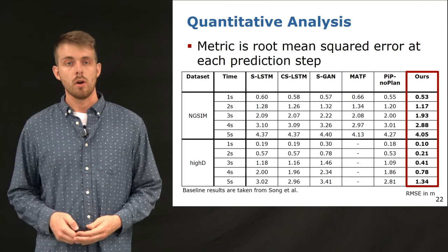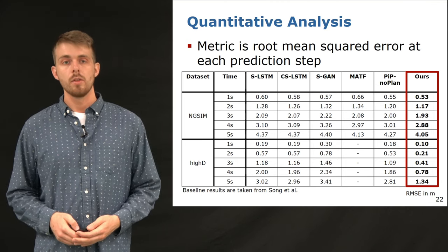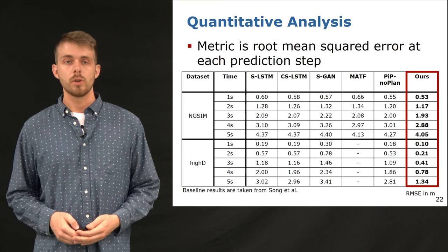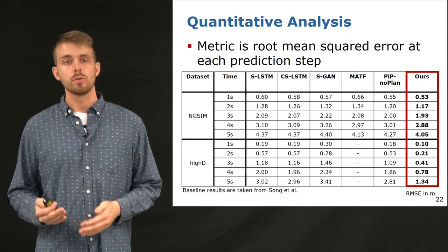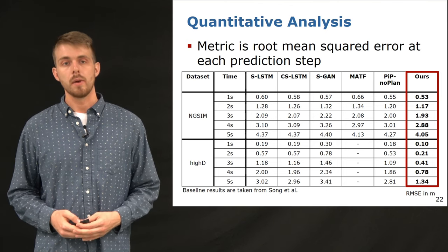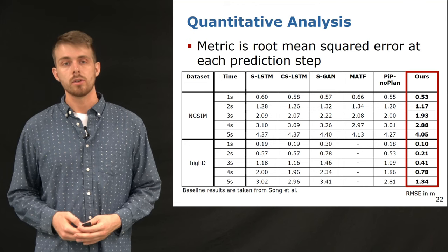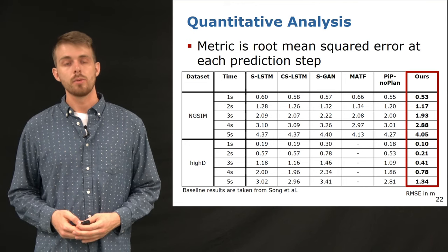To reason about our model's performance, we compare the results with several baselines. The metric is the root mean squared error between the predicted and the ground truth future trajectory. Our approach outperforms all other baselines for both datasets. For a more detailed discussion on the quantitative results, we refer to our paper.